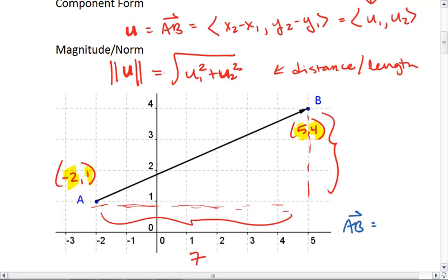And we have a vertical distance of 4 minus 1, which is 3. Thus, the component form is 7, 3.